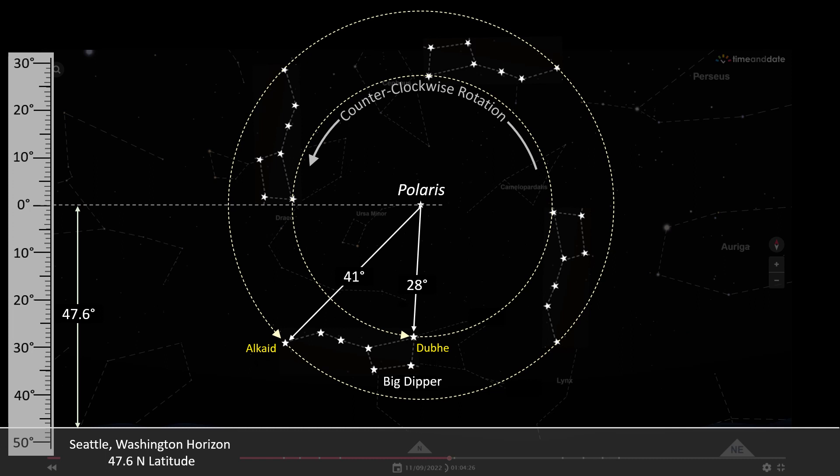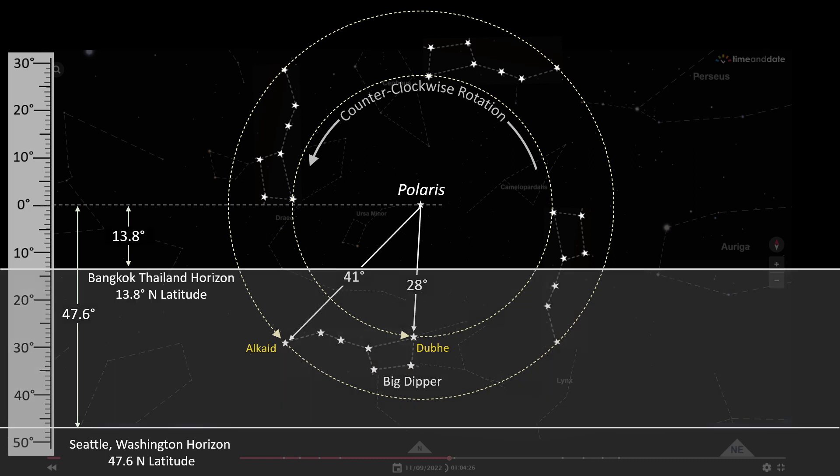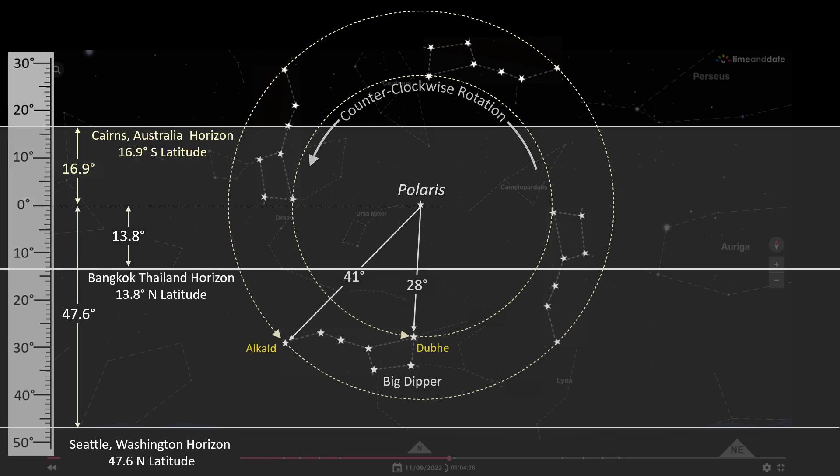Now, in my hometown of Seattle, Polaris is about 47.6 degrees above the horizon. So on a clear night, I could always see the Big Dipper when it was below Polaris. Now, I currently live in Bangkok, Thailand, and from here, Polaris is about 13.8 degrees above the horizon. So it's pretty obvious that when the Big Dipper is below Polaris, the reason I can't see it is because it is below the horizon. I also spent almost a year in Cairns, which is on the northeast coast of Australia, and this is where I learned to scuba dive. Now, on a clear night, you could see the Big Dipper as it passed over the top of Polaris, but again, it's pretty obvious why Polaris is not visible from Cairns.